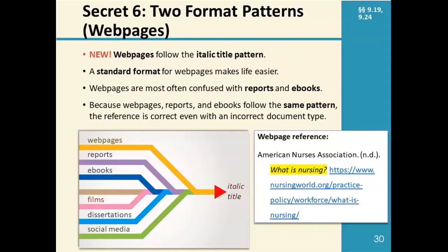One pair that is a bit confusing has to do with citing the news. Newspaper and magazine articles — periodicals — use italic sources, whereas stories on news websites like CNN are web pages and those use the italic title. You should use the periodical format if you see the word 'newspaper' or 'magazine' on an about us page, or if there's a print issue that can be delivered to your house. Otherwise, if you're on CNN, BBC News, or HuffPost, that's the italic title format.